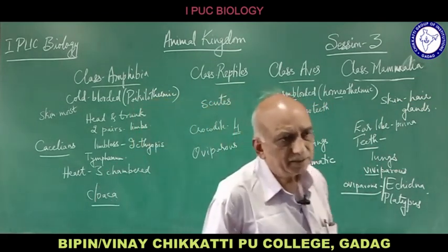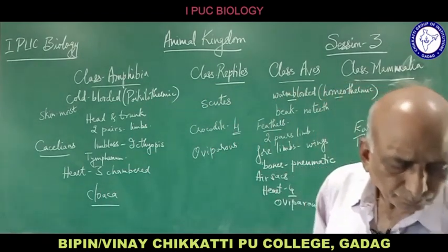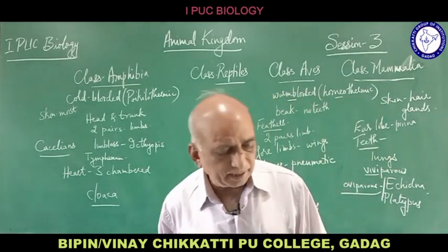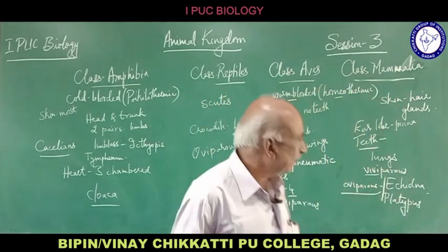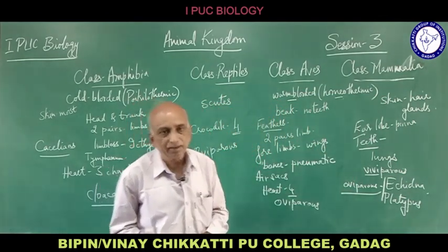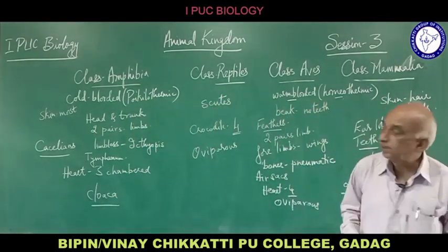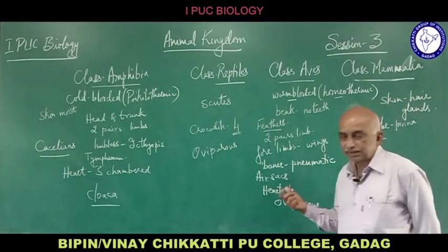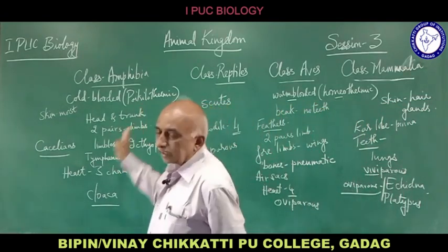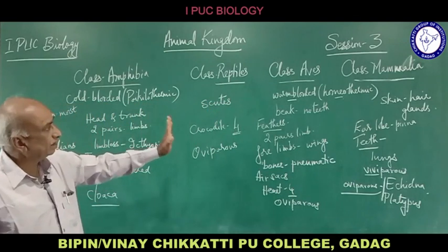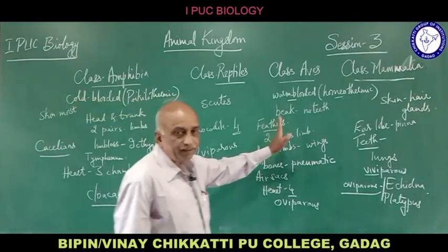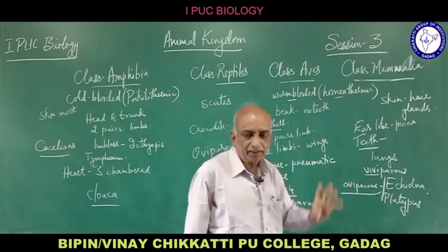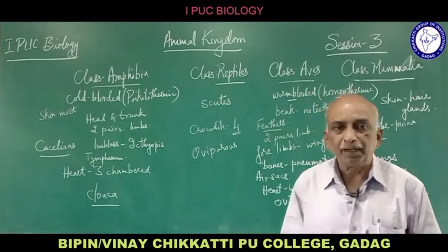Examples of class Mammalia include shrews, elephant, monkey, kangaroo, whales, tigers and other cattle. These are the seven classes under phylum Chordata: three classes of fishes (Cyclostomata, Chondrichthyes, Osteichthyes), class Amphibia, class Reptilia, class Aves and class Mammalia. That concludes phylum Chordata and the animal kingdom.